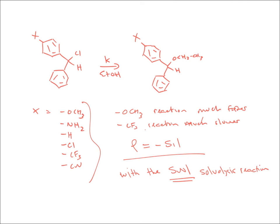With the SN1 reaction, this rho value of minus 5.1 tells us that we have significant positive charge development and considerable influence of the substituents on the rate constant.